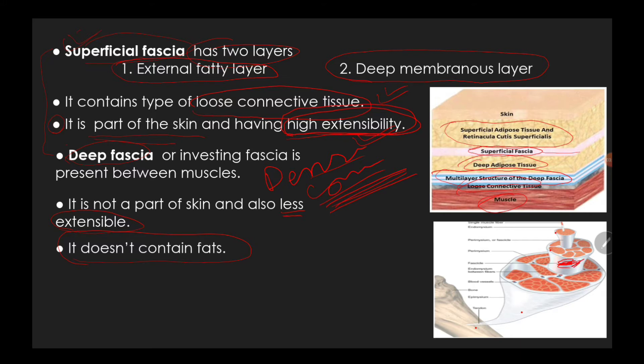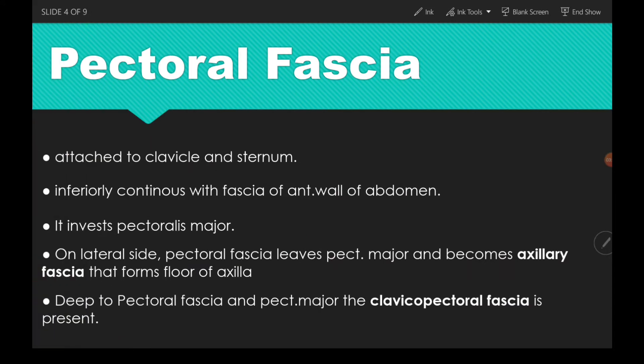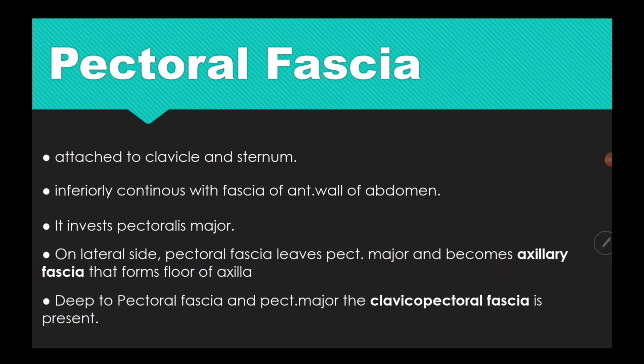The main function of deep fascia is that it directly attaches to the bone. It covers the tendons, vessels, and bones. If there is no tendon or cartilage present, then the deep fascia attaches directly to the bone.